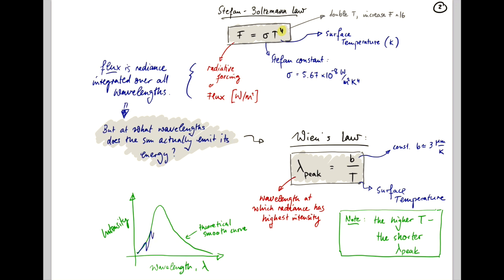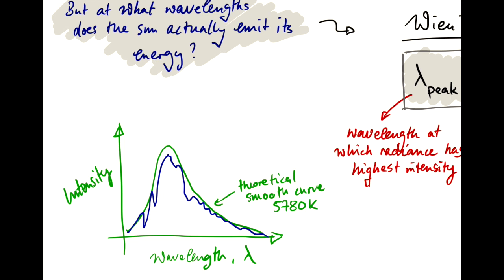And for the Sun, the best fit to the actual spectrum is this smooth curve that corresponds to a body at 5780 Kelvin. The blue line here is an approximation to the actual spectrum. It's a little rugged and not as smooth as the theoretical curve because the Sun does not actually emit at just one temperature. It also emits at different temperatures because radiation comes from different depths of the photosphere and their sunspots and other irregularities.